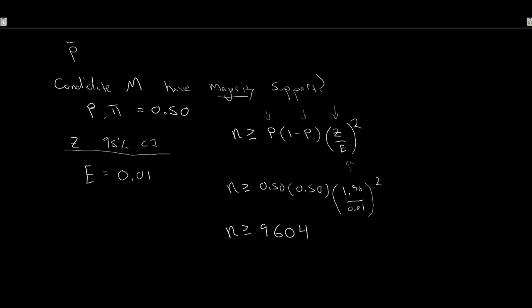So at minimum I should be surveying 9,604 people in order to get that estimate within plus or minus 1 percentage point. That's how we calculate minimum sample size for proportions — and similarly, for means, depending on what we're estimating.